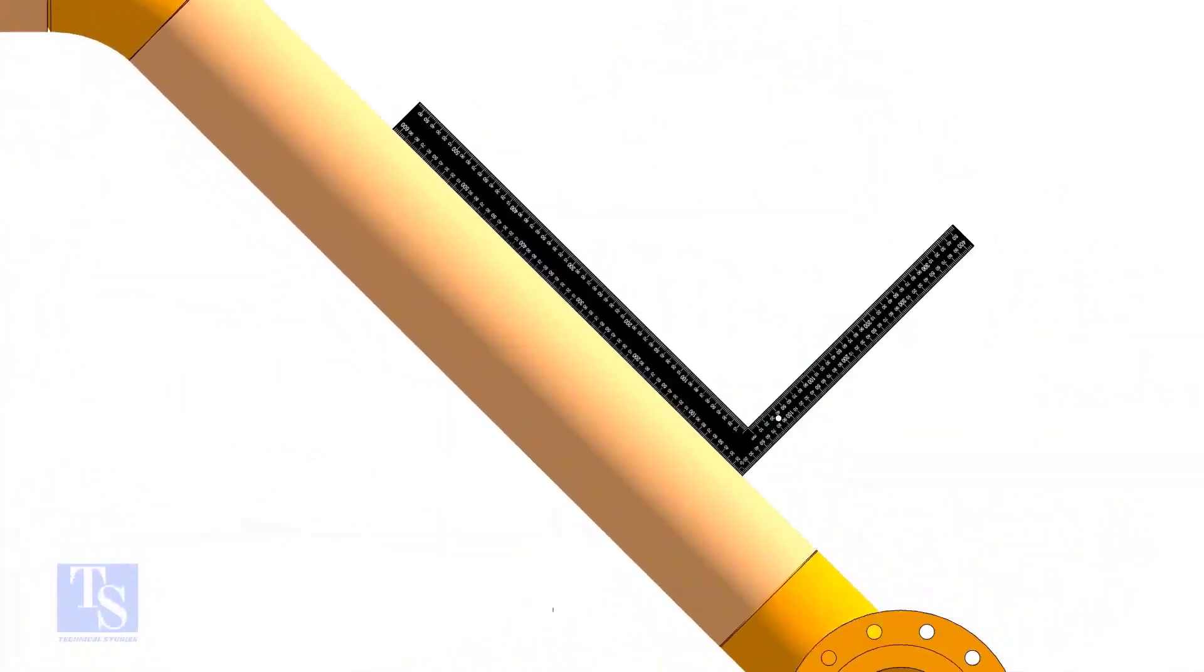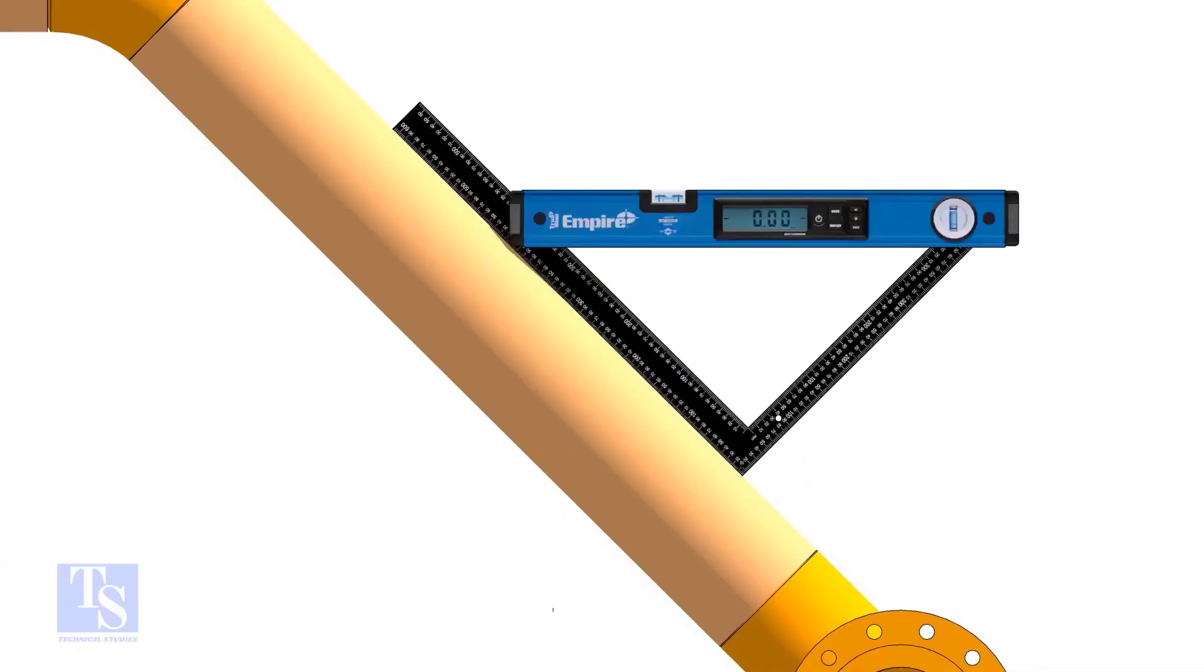Put a large set square or a right angle on the pipe as shown. Hold a spirit level at the right angle, perfectly horizontal.